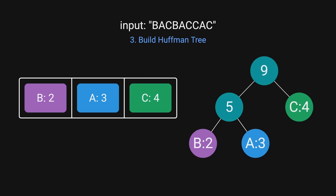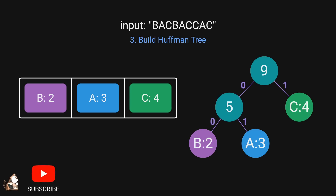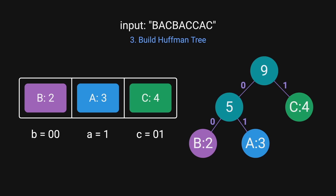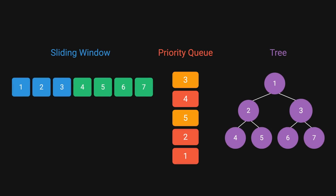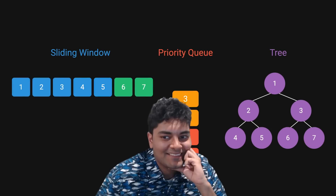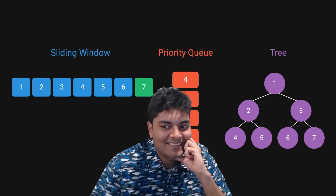To assign codes, we traverse the tree from the root to the leaves. Moving left assigns a 0 and moving right assigns a 1. So the encoding for this input would become this. Sliding window, priority queue, trees — LeetCode would be so proud of me right now.